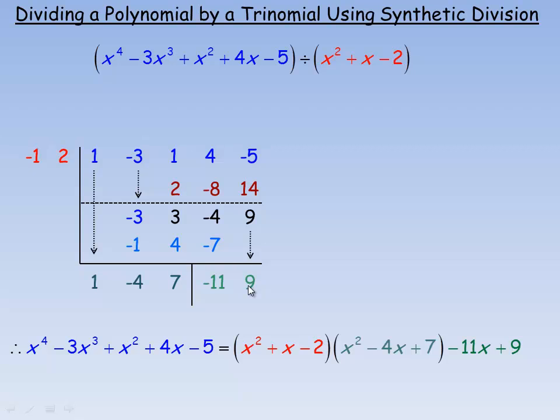If you remember the way synthetic division goes, constant at the end, first power of x, second power of x, etc. So constant at the end, first power of x, that's why this is negative 4x to the first. This would be x squared, the next one would be x cubed.